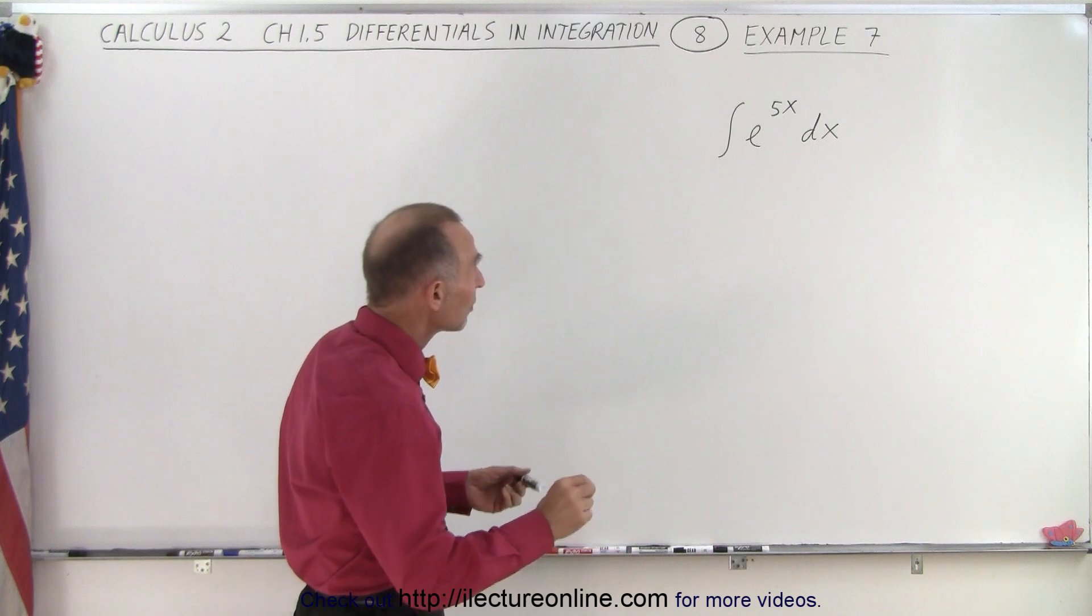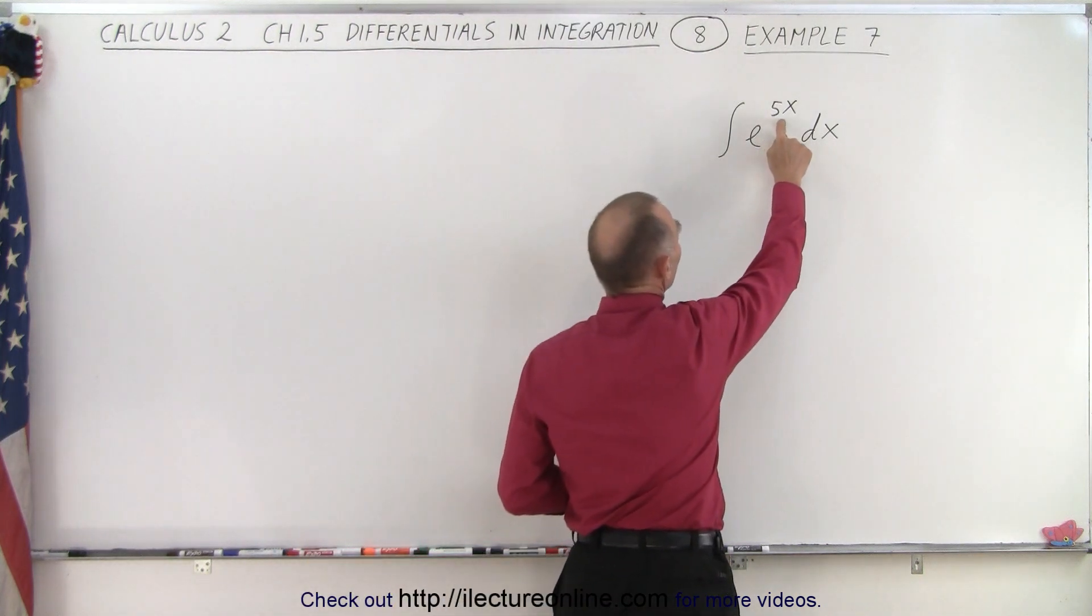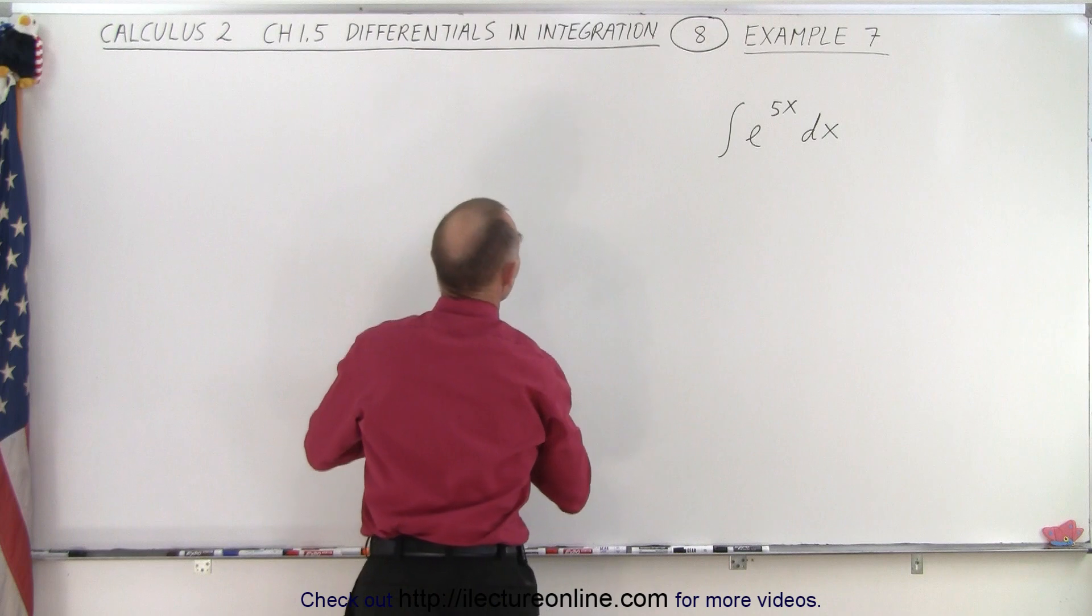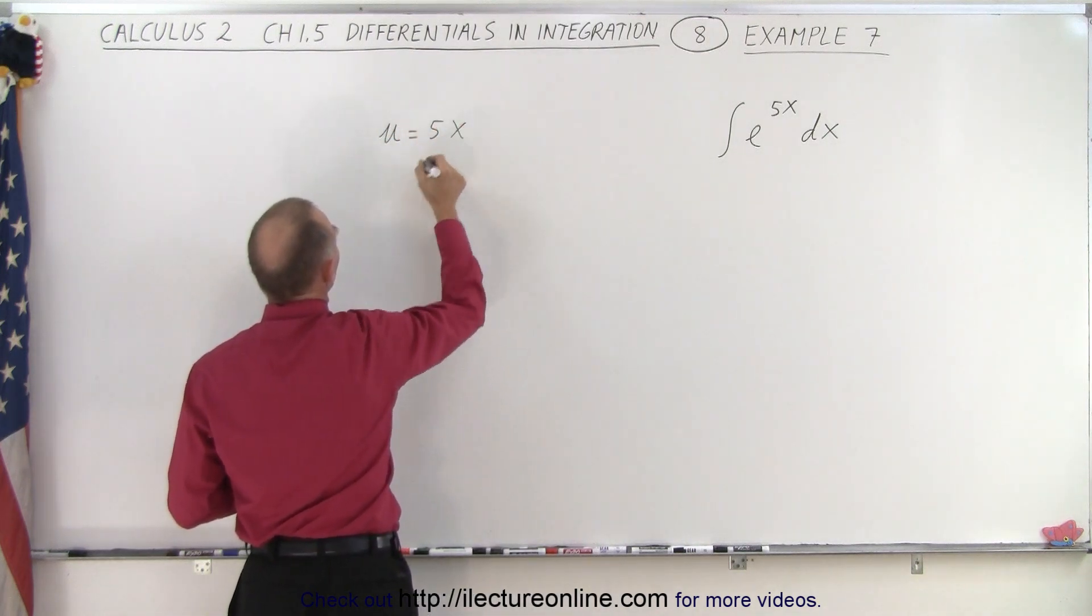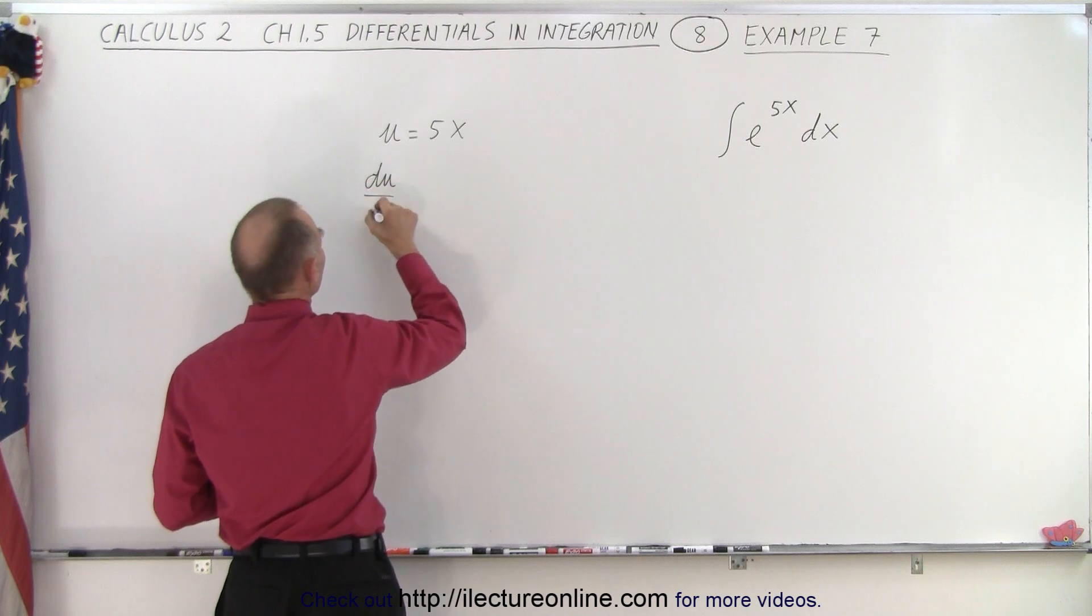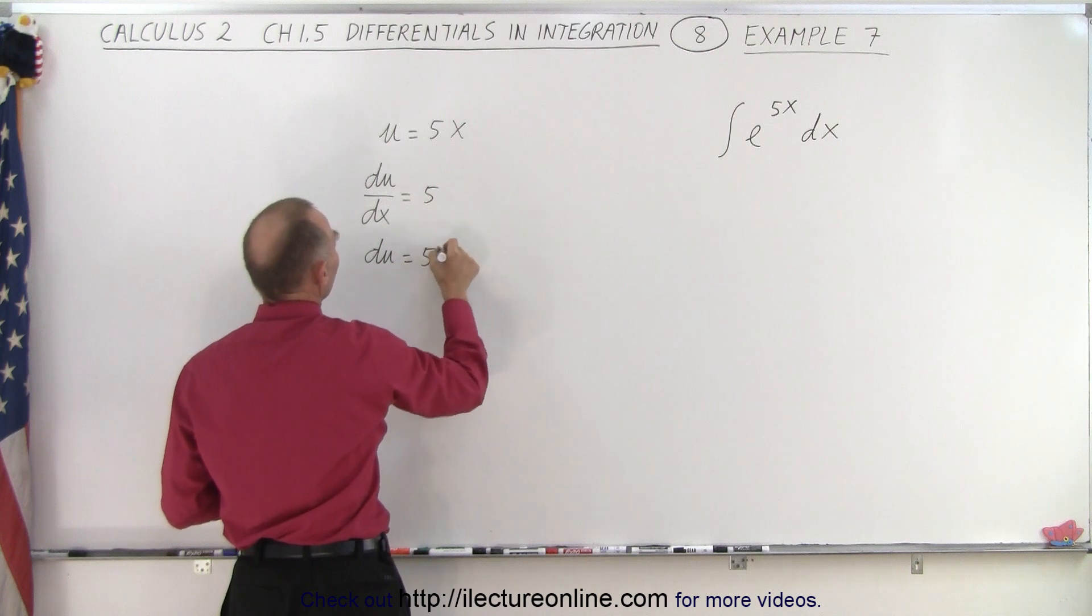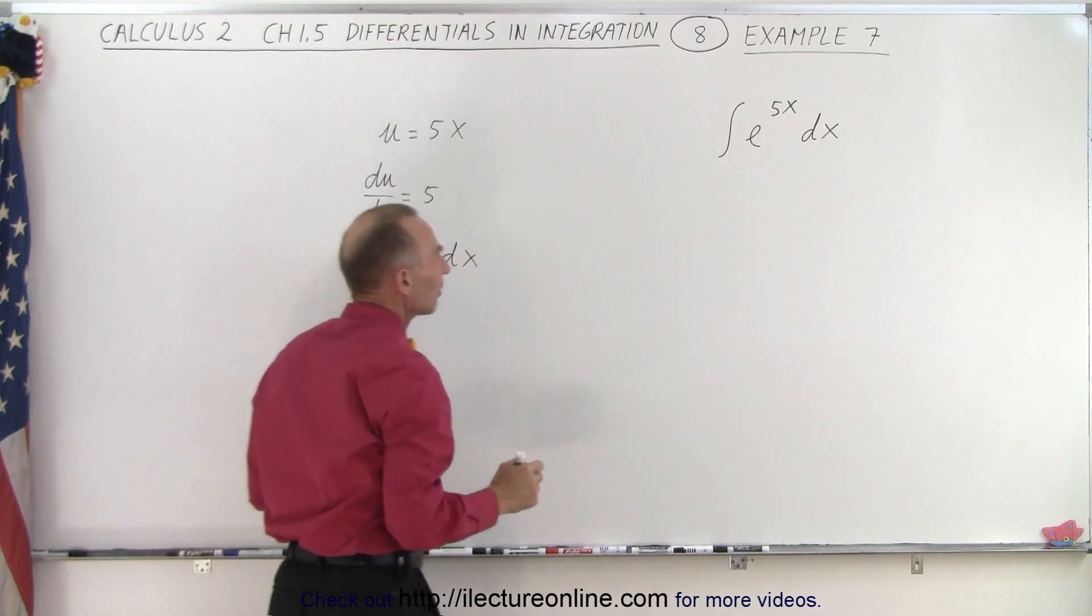What you need to do here is recognize that the exponent will become your u. You're going to let 5x equal u, so u equals 5x. That means your du/dx, when you take the derivative of that exponent, you get 5, or du is equal to 5dx.